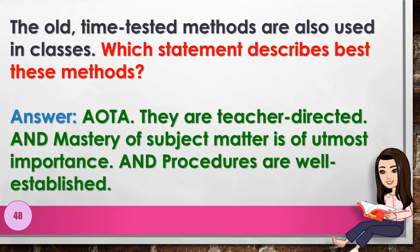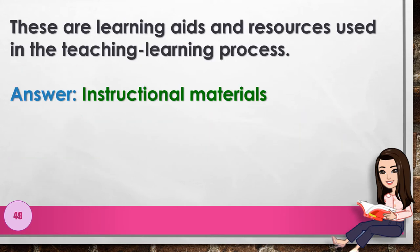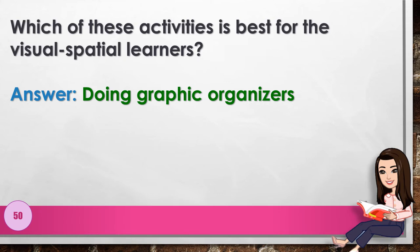Number 48: The old time-tested methods are also used in classes. Which statement best describes these methods? Answer: all of the above — they are teacher-directed, mastery of subject matter is of utmost importance, and procedures are well established. Number 49: These are learning aids and resources used in the teaching-learning process. Answer: instructional materials. Number 50: Which of these activities is best for visual-spatial learners? Answer: doing graphic organizers.